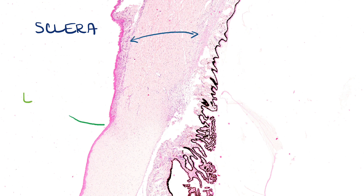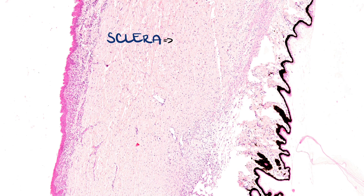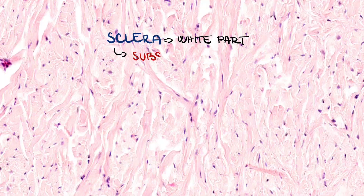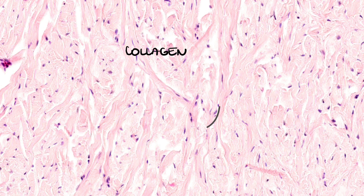Now let's look at the sclera. This is the already mentioned limbus — the border between the cornea and the sclera — that contains stem cells for the outer epithelium of the cornea. We cannot differentiate these stem cells here; they are probably somewhere in this region, and to identify them we would need special immunostaining. The sclera is the white part of the eye and forms the wall of the entire eye. The substantia propria, the main layer, is composed of dense irregular collagen connective tissue. Here we can see a layer of thick collagen fibers and many fibroblasts.